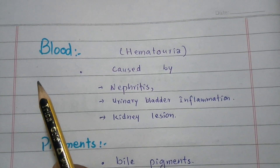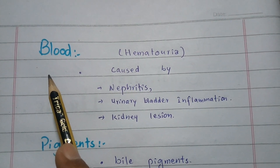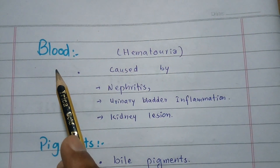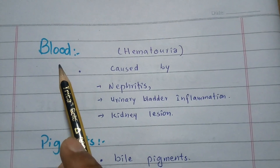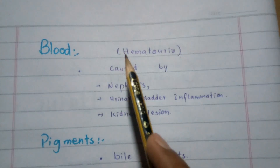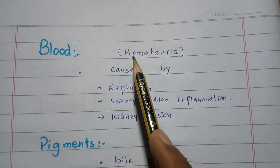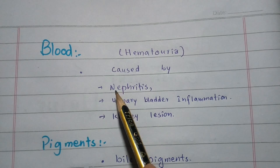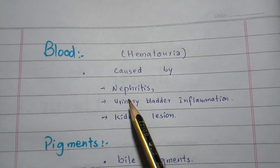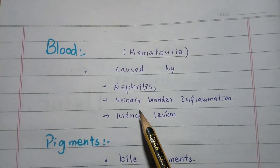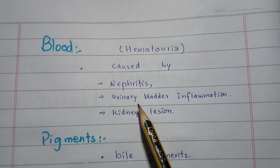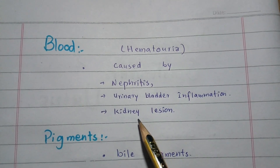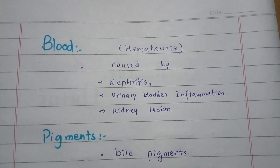The next abnormal component is blood. The presence of blood in the urine is called hematuria. It is not good for the body. It is mostly caused by nephritis, urinary bladder inflammation, or kidney lesions due to stones, etc.